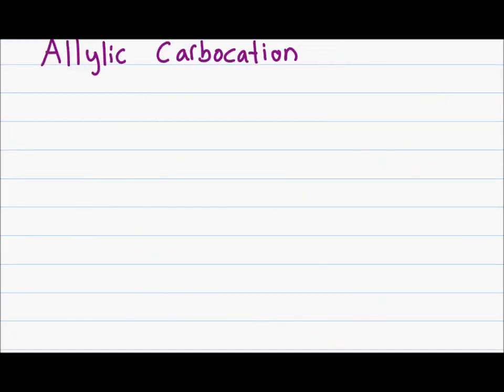The previous rules only applied to standard molecules with no double bonds or conjugated systems. But what happens when you have an allylic carbocation? An allyl group is when you have a C double-bonded to a C as a substituent on your chain, and an allylic carbocation occurs when you have a carbon-to-carbon double bond next to a carbon holding a positive charge. This is important because a molecule like this has resonance, and resonance will always provide additional stability.